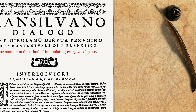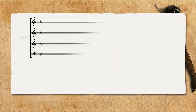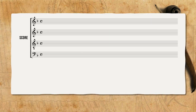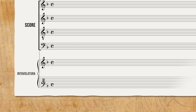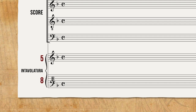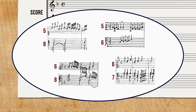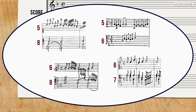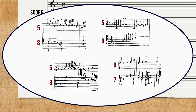As a first step, he recommends that you put the piece you want to intabulate into a score, putting the two staves of the keyboard intavolatura under the score: a five-line staff for the right hand, and an eight-line staff for the left hand. There were different standards for the number of lines in the left hand, but generally it had more than the right hand, and included two clefs as an aid in orientation.